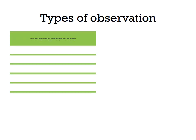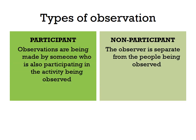The last types are participant observation and non-participant observation. A participant observation is when the observations are made by someone who is also participating in the activity being observed — for example, going to a sixth-form common room and observing peers while also being part of the group. A non-participant observation is when the observer is separate from the people being observed. A problem with participant observations is that it's hard to remain objective if you are part of the group, which could introduce bias.